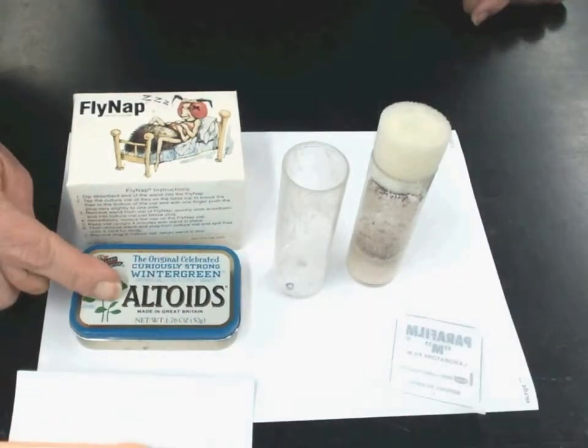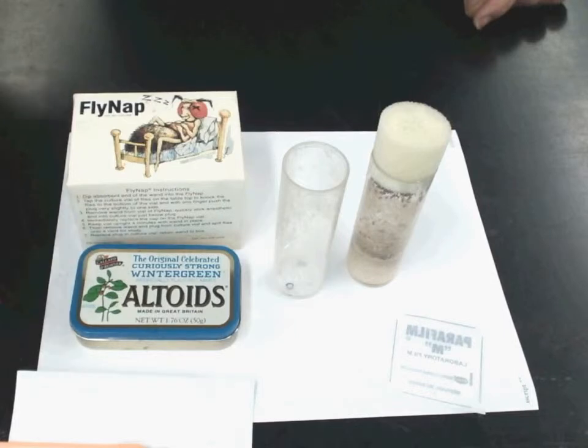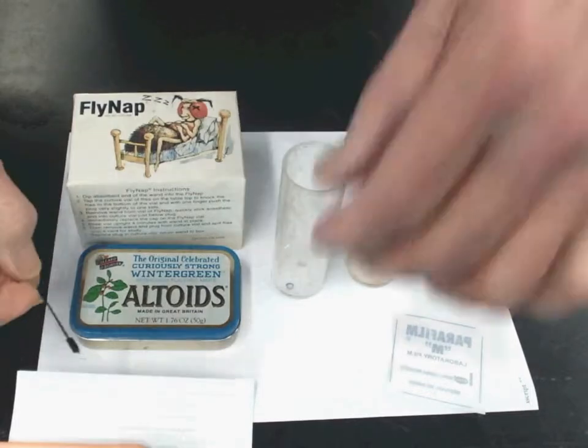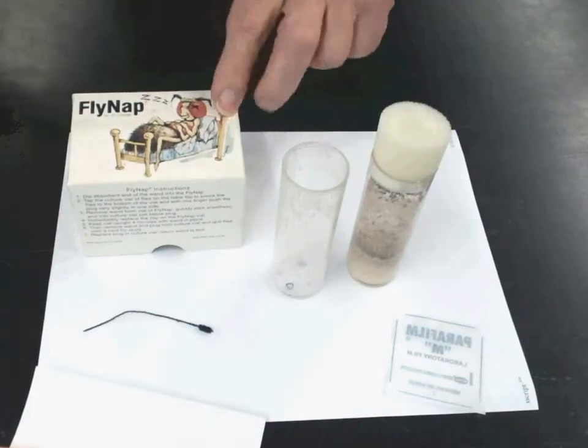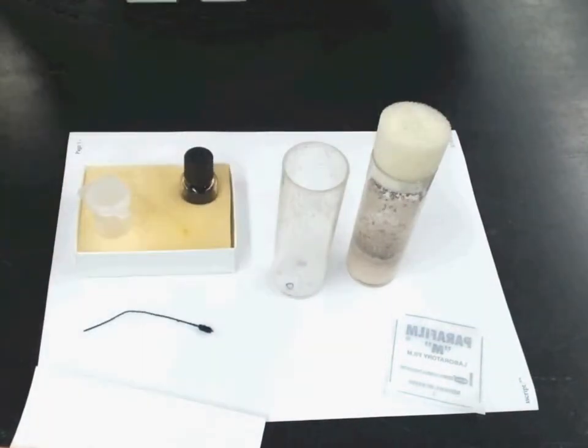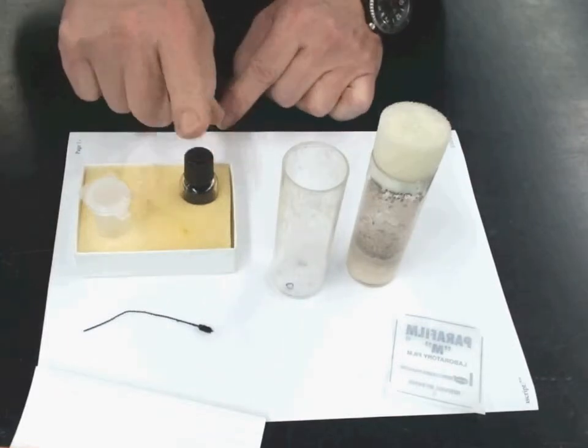So inside the box, the Altoid box here, you're going to find these fly wands. Inside the fly nap box, you're going to find the fly nap and another container. This is the fly nap.